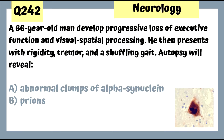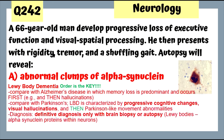Question 242: A 66-year-old male with progressive loss of executive function and visual spatial processing, then rigidity, tremor, and shuffling gait — autopsy reveals abnormal clumps of alpha-synuclein — this is Lewy body dementia. To distinguish from Alzheimer's and Parkinson's, order is key: in Lewy body dementia, there are progressive cognitive changes and visual hallucinations first, followed by Parkinson-like movement abnormalities.